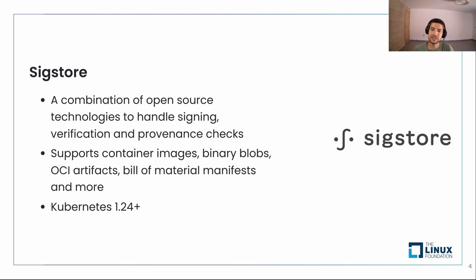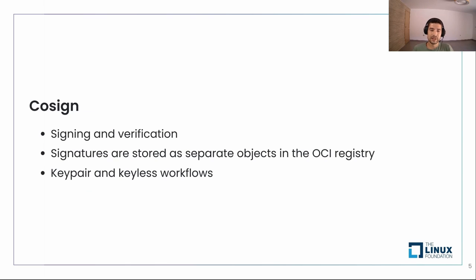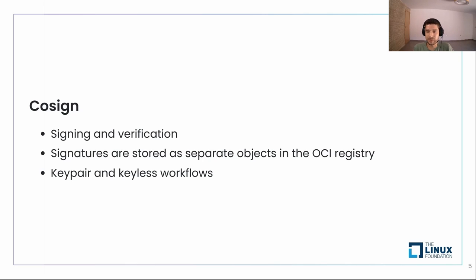So let's talk about some of the tools that come with Sigstore. Cosign is the tool we use for the actual signing and verification. If we are signing an artifact stored in an OCI registry, such as a container image, the signature will be stored as a separate object in the same OCI registry with a predictable name — which is the digest of this image.